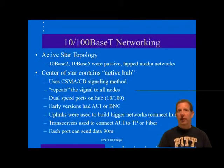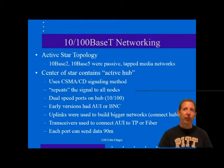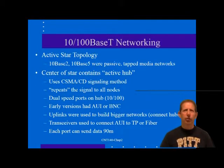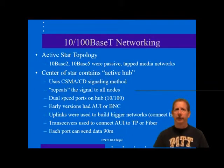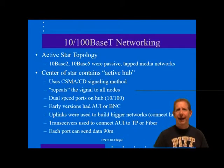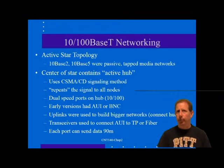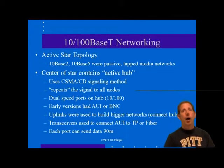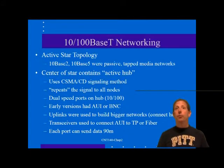A 10/100 hub or switch typically has 8, 12, 24, or even more dual-speed ports. Dual-speed hubs usually sense the speed of the connected device and adjust accordingly. The hub or switch is capable of converting to similar speeds between any two or more ports. A typical hub may be a standalone unit or part of a chassis with plug-in hub cards. Older standalone hubs had one port each for Thicknet and Thinnet connections. The Thicknet port has an AUI (Attachment User Interface) resembling a serial port, and the Thinnet port has what we call a BNC (Bayonet Neill-Concelman) connector.